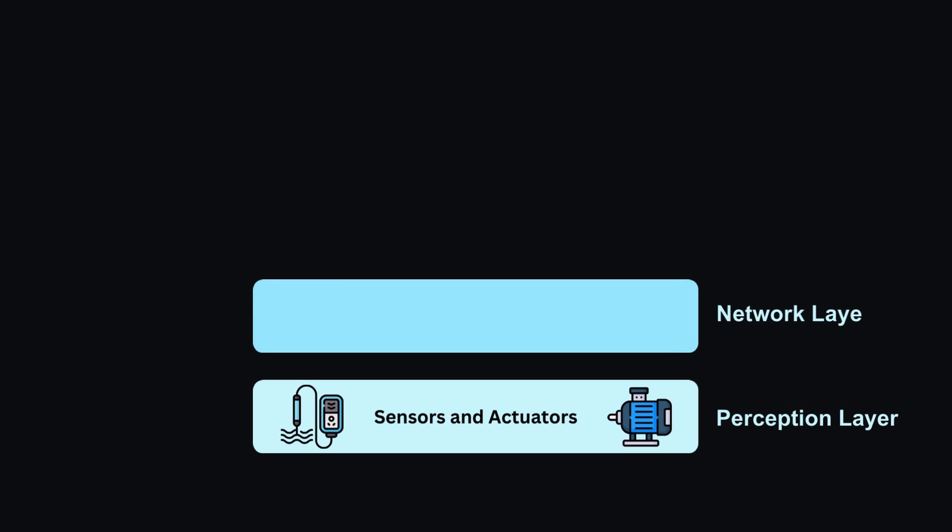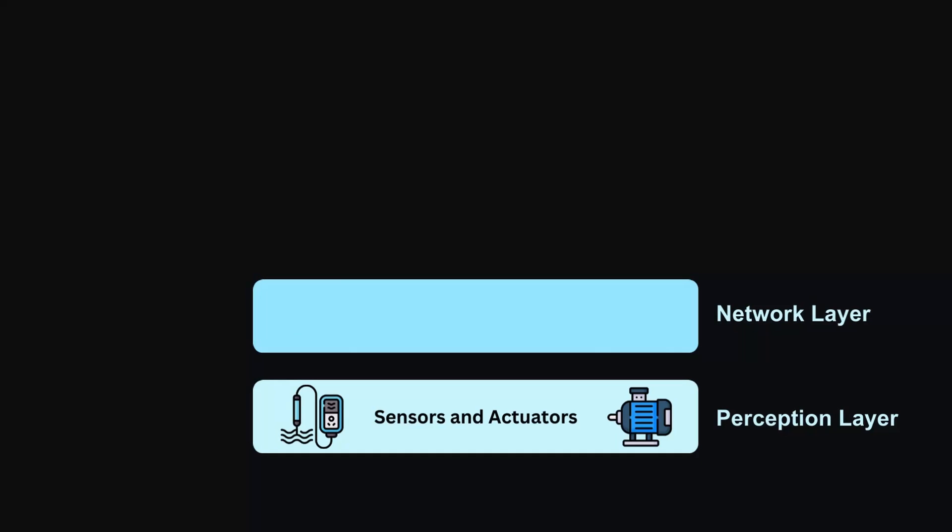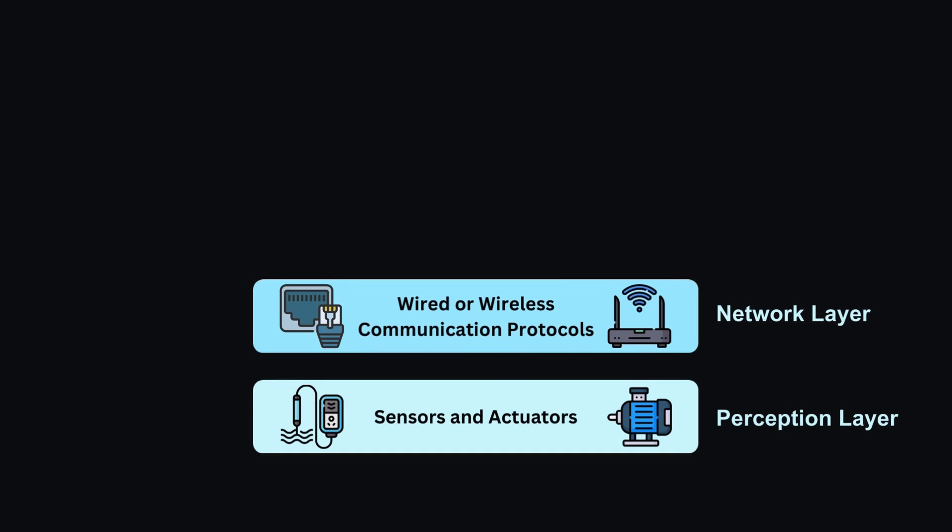Network layer: this layer facilitates communication between the perception layer and the other layers of the IoT architecture. It involves various wired and wireless communication technologies and protocols for data transmission — such as Wi-Fi, Bluetooth, ZigBee, Cellular, Ethernet IP, and other industrial technologies. An example of the network layer is our home Wi-Fi router, through which all our smart devices interact.